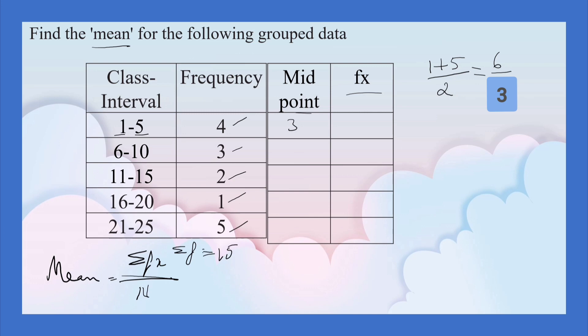Here 6 plus 10, 16. 16 by 2, 8. Here 26 by 2 that is 13. Here 36 by 2 that is 18. Here 46 by 2 that is 23. Now let us multiply f into x.